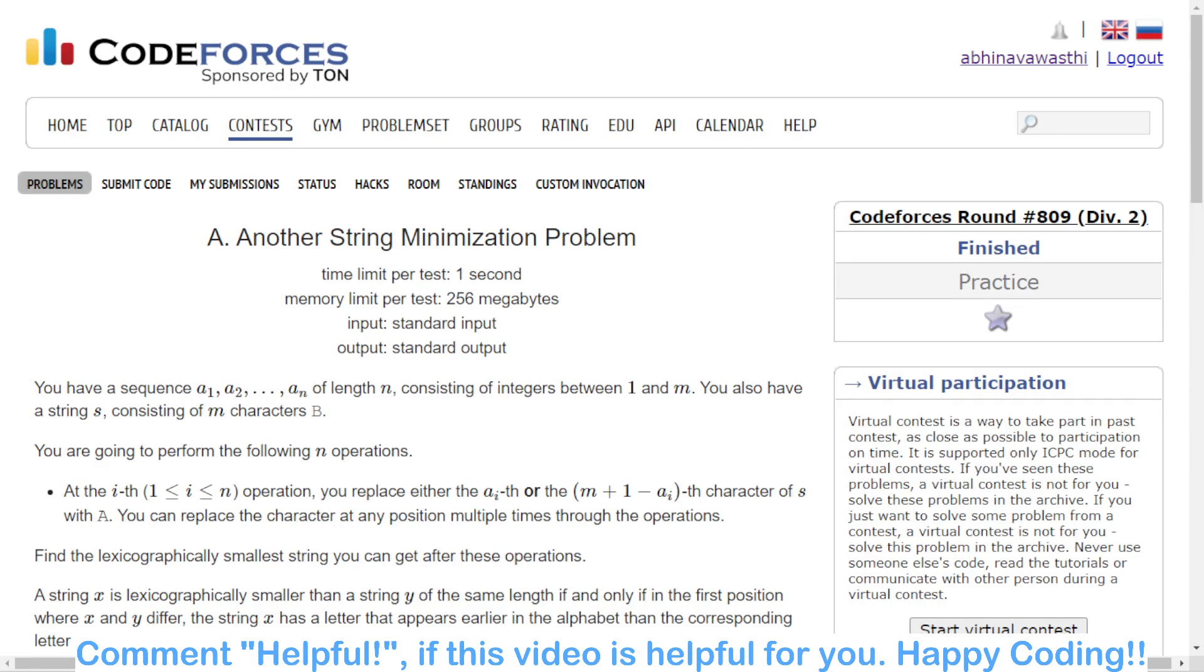Hello and welcome back to this channel. This is Abhinav. In this video, we are going to discuss problem A of Codeforces Round 809. We are given a sequence consisting of integers from 1 to n, and we also have a string s consisting of m characters.